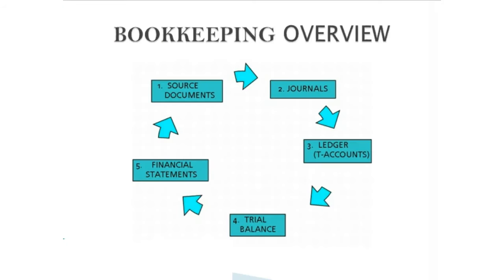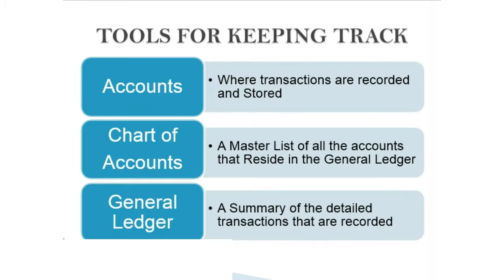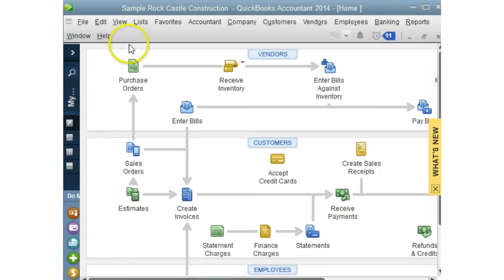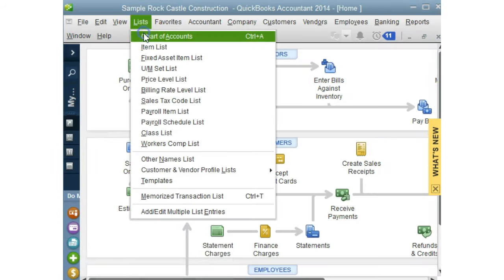As you can see, bookkeeping provides a system according to the rules of accounting to capture and keep track of everything that goes on in your business. Now let's look at what we need to keep track of. When you first set up your QuickBooks file, you need to set up your accounts — this is where your transactions are going to be stored. Once you enter your accounts, QuickBooks puts them into a master list called the chart of accounts. From the home page, go to List, then Chart of Accounts.